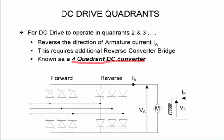So it requires an additional reverse converter bridge because if I only have the previous one then I can only have current flow in one direction. So if I want to return the current flow to the source then I need a converter bridge but in the opposite direction. So with this it can operate in all four quadrants.